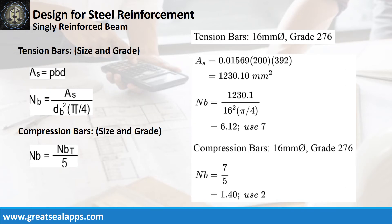Given ρ equals 0.01569, b equals 200 mm, and d equals 392 mm, the area of steel for tension bars is 1230.1 square millimeters, and the number of bars for 16 mm bar is 7. The number of compression bars is 2.